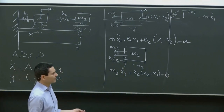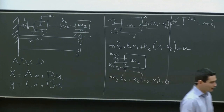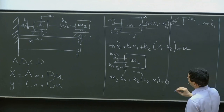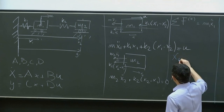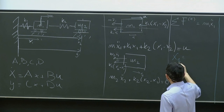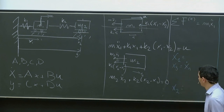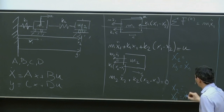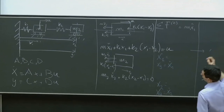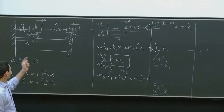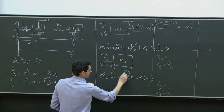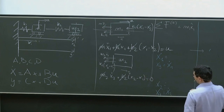Now how do we get to A, B, C, D? We need to do some magic. We're going to say: x1 is x1, x2 is x2 as already defined. We can say x3 is x1 dot, and x4 is x2 dot. Let's make M1, M2, k1, and k2 all equal to one — it doesn't really matter, we're just looking at how to get the ABCD matrices. So x1 double dot is x3 dot, because if you take the derivative of x3 you get x1 double dot. Rewriting: x3 dot plus x1 plus (x1 minus x2) = u, which gives x3 dot plus 2*x1 - x2 = u. Similarly, x4 dot + (x2 - x1) = 0.